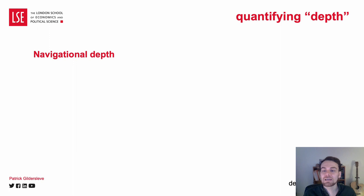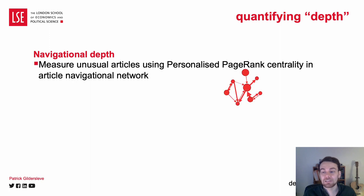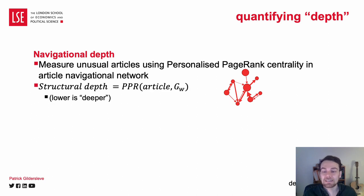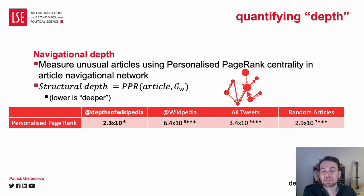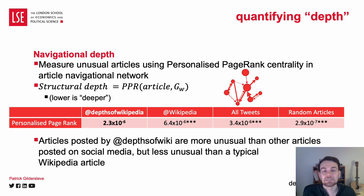Similarly, we can consider navigational network structure — not just how many links exist, but how often they are clicked by users — this time taking the personalized page rank centrality measure. Yet again, testing the mean scores, we find that Depths of Wikipedia articles are more unusual than those posted by Wikipedia and the rest of Twitter, but not the randomly selected Wikipedia articles.